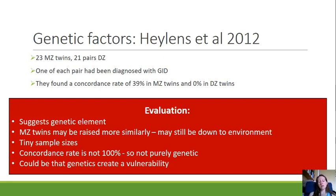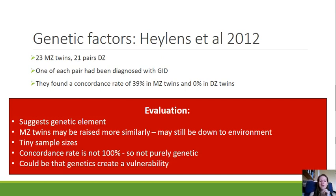The concordance rate is not 100%, so GID is not purely caused by genetic factors. A possible solution is the diathesis-stress model — genetics may create a vulnerability, which is then coupled with an environmental stressor that triggers gender identity disorder. We've looked at this in many different contexts. So we can say genetics may have an impact, but we can't say it's purely down to genetics or purely down to biological factors.